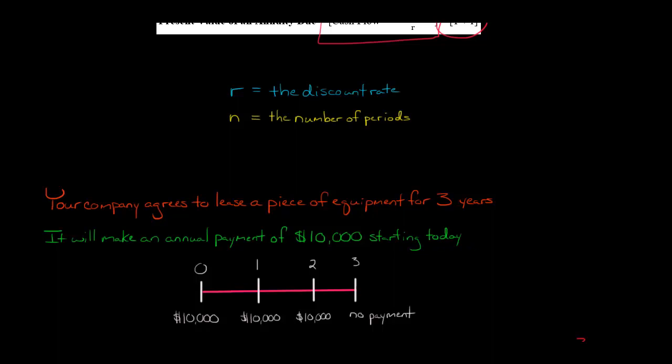With an ordinary annuity, the first payment wouldn't occur until one year from today. Looking at this timeline, we have three years, so three cash flows of $10,000. We pay $10,000 today as our first payment, then $10,000 one year from now, $10,000 two years from now, and no payment three years from now.